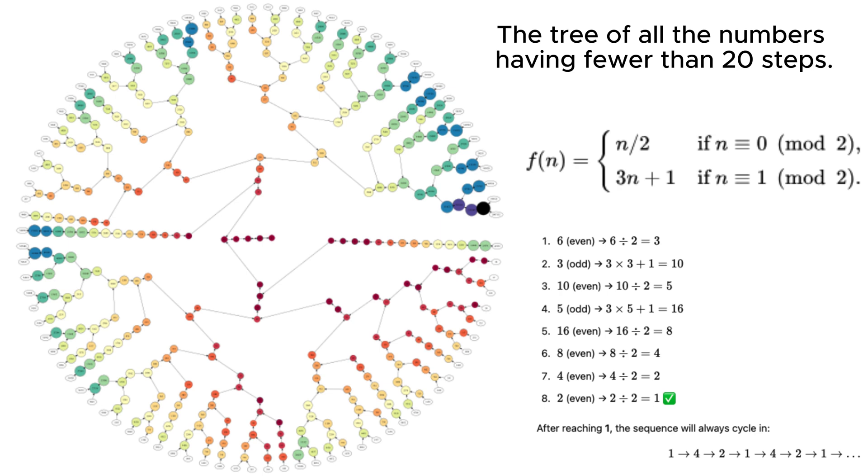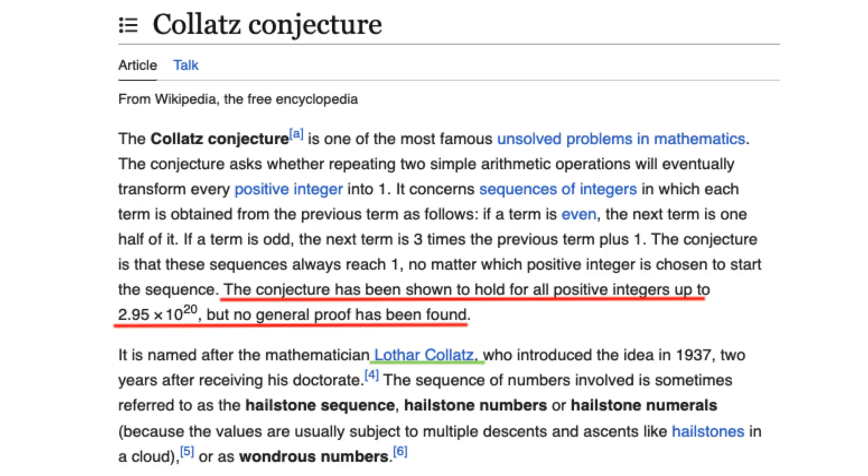Despite its simplicity, no one has been able to prove that this process works for all numbers, making it an enduring mystery in number theory. First introduced by Lothar Collatz in 1937, mathematicians have tested this conjecture on trillions of numbers without finding a single counter example.